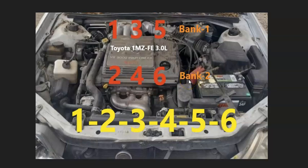The firing order for the Toyota 1MZ FE 3.0 liter engine is really easy. It's just one, two, three, four, five, six.